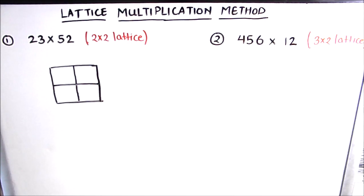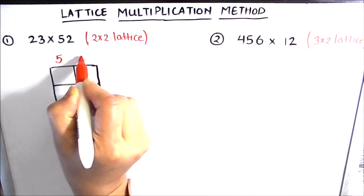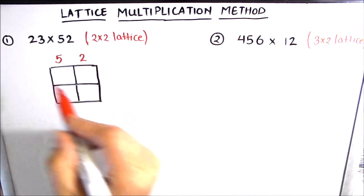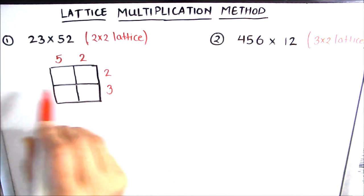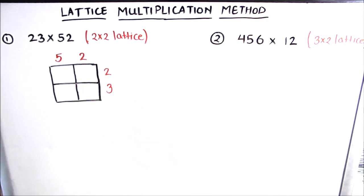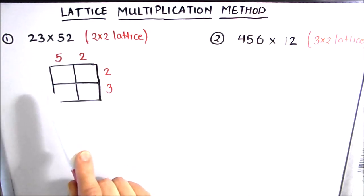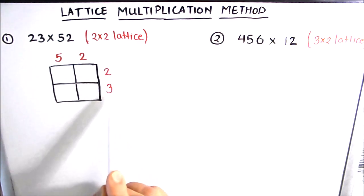Here the highest place value number is 52 because it has five tens, so 52 will go on the columns. We write 52 on top of the columns, and the number with the smaller place value, which is 23, will go on the rows. Now we will make the diagonals of each square. Note that since it is a two-by-two square, it makes no difference in the answer if we place 23 along the columns and 52 along the rows.